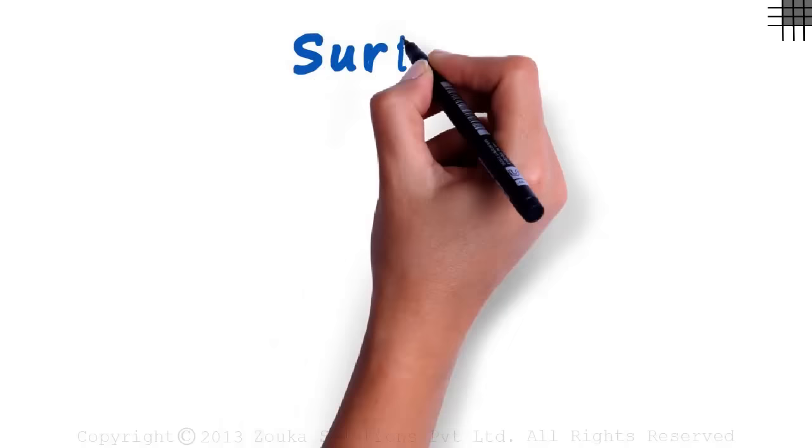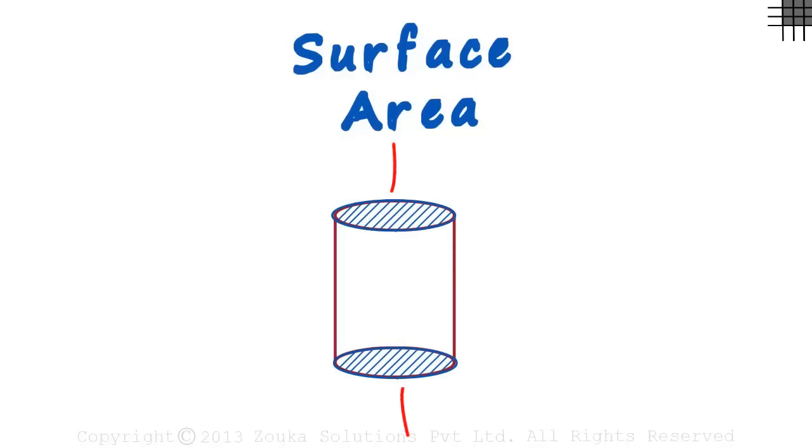Understanding how the surface area of a cylinder is derived is very interesting. Look at this cylinder. It has two blue circular ends, one on top and one at the bottom.